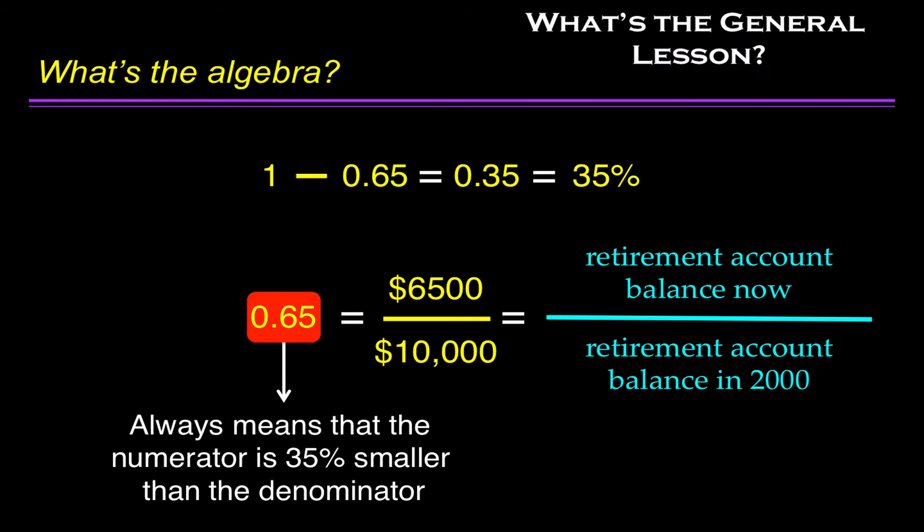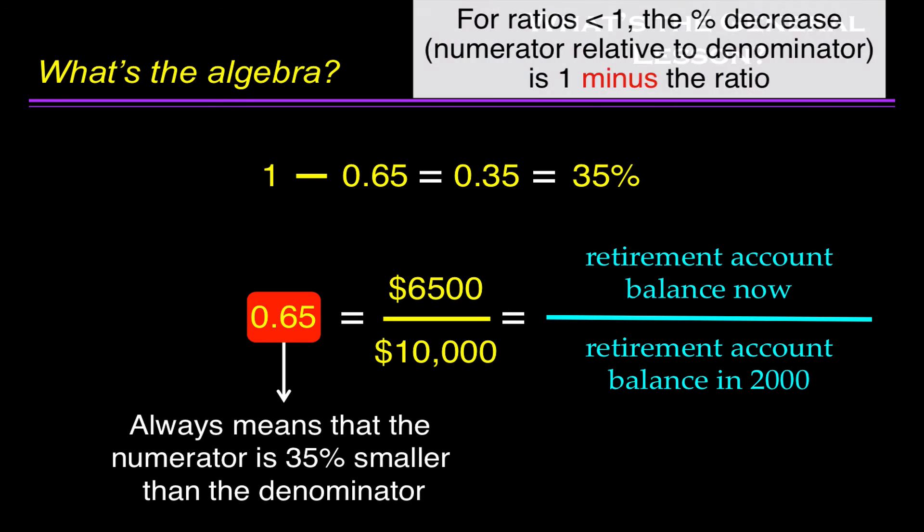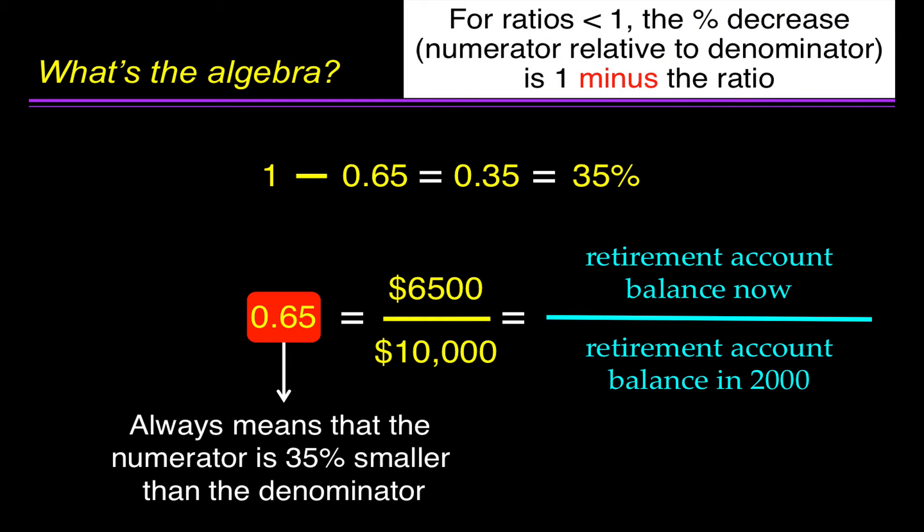What's the general lesson? For ratios less than 1, the percentage decrease — numerator relative to the denominator — is 1 minus the ratio.